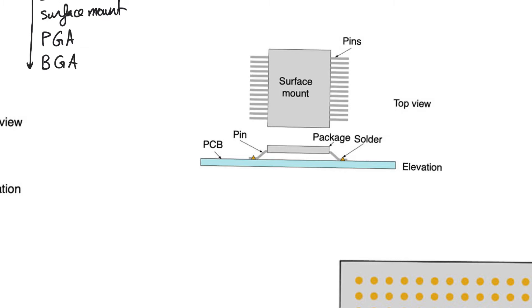In surface mount, the pins come out of the periphery of the perimeter of the package, usually from one of two sides, but sometimes from all four sides. As they come out, they don't make a very sharp angle and go down. Instead, they make a gentle angle and straighten out towards the bottom.